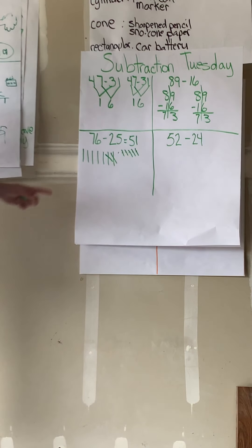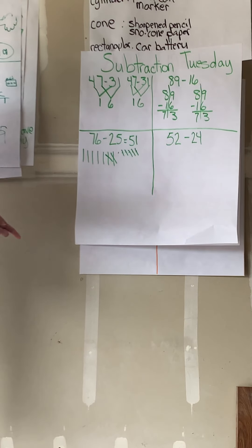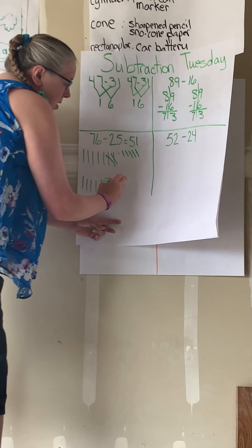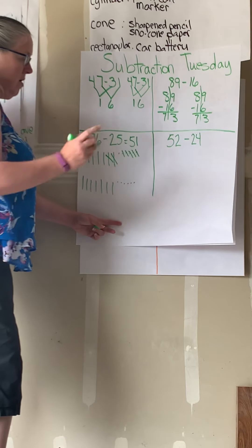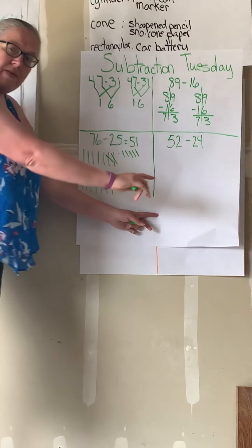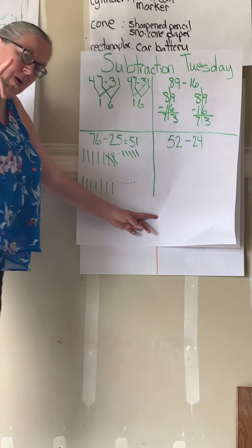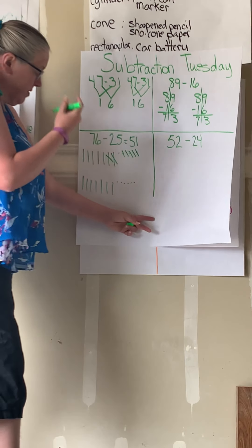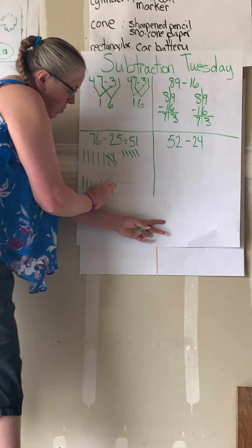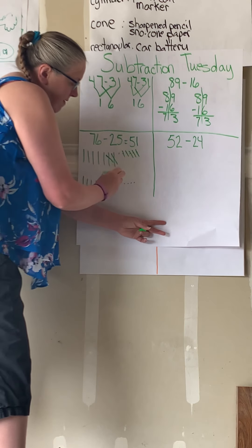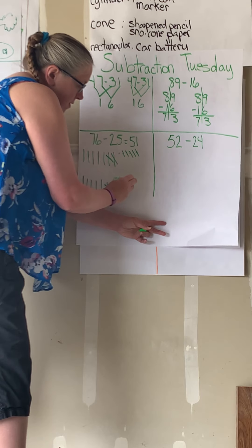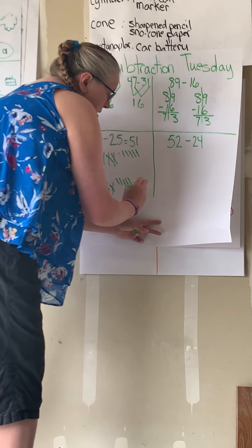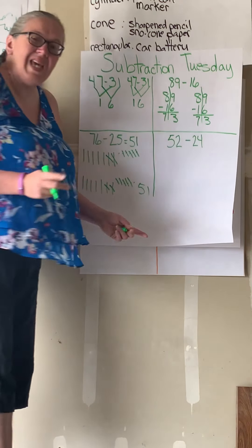One more picture. 10, 20, 30, 40, 50, 60, 70, one, two, three, four, five, six. Now I'm going to cross off because I'm subtracting — taking it away. This time I'm going to start with my tens just to see if they're the same. Cross off two tens: one, two. Cross off five ones: one, two, three, four, five. 10, 20, 30, 40, 50, one. Once again, they're the same.